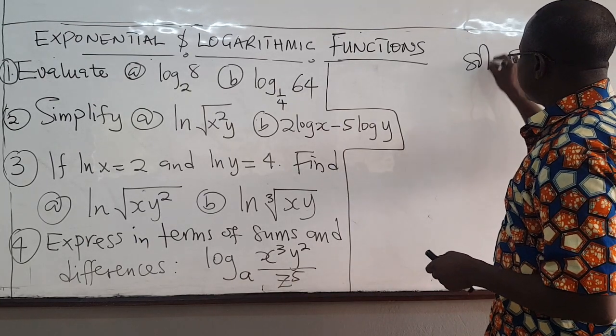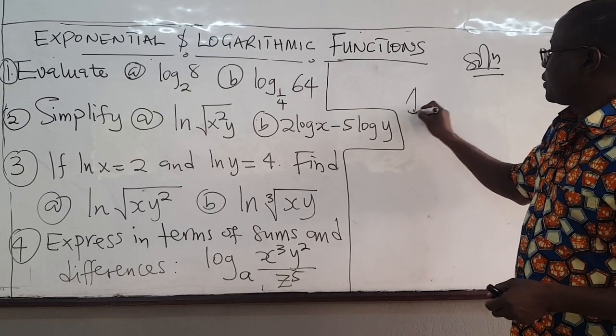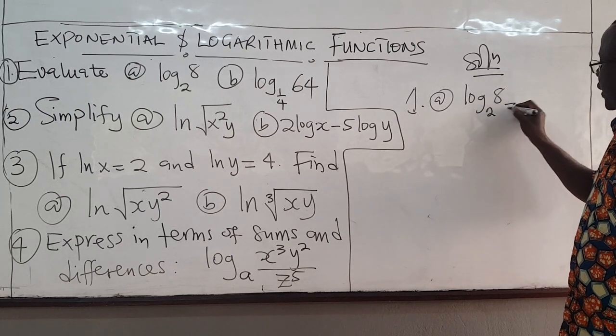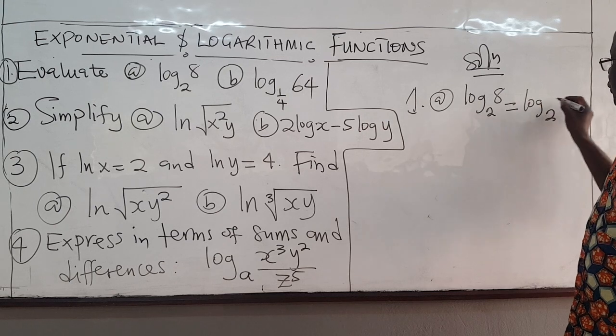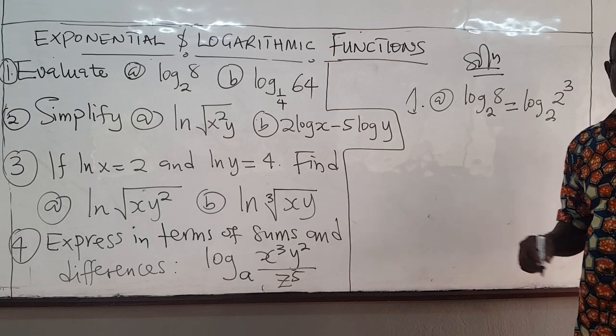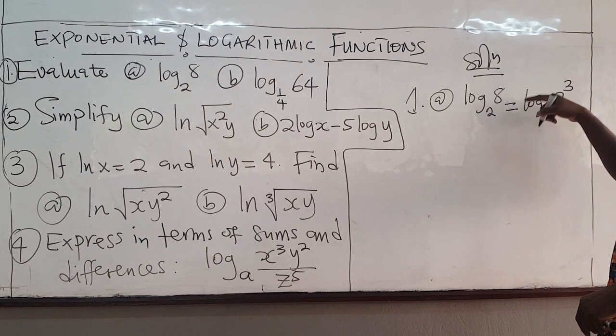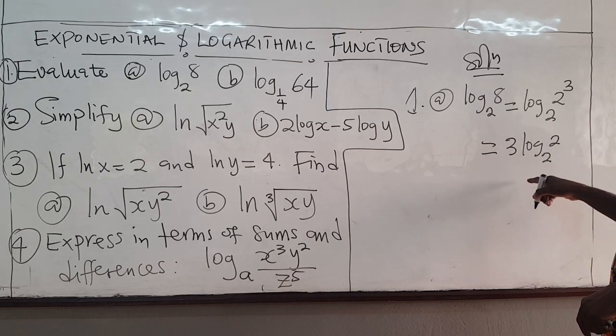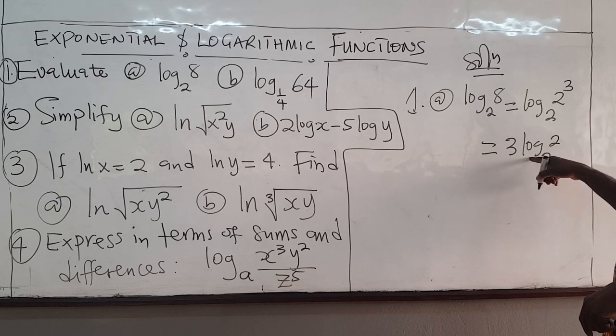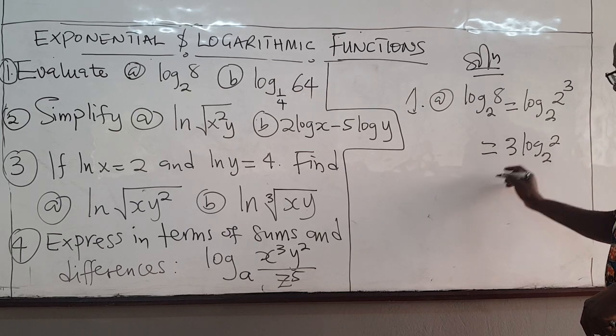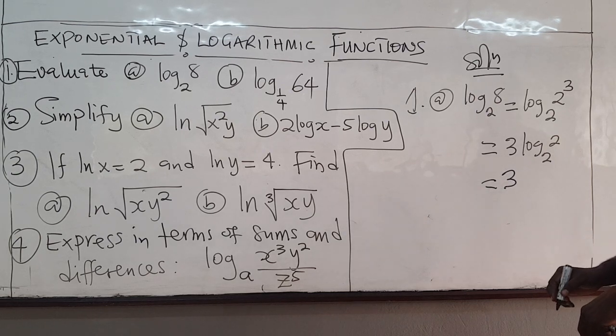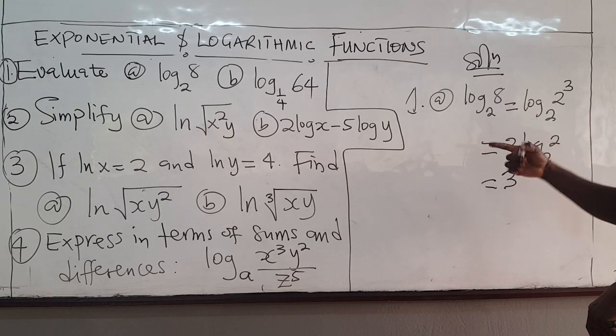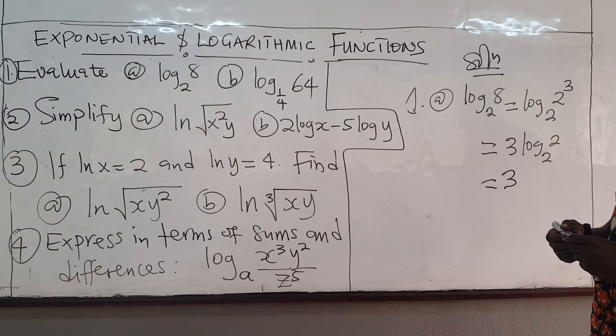Alright, so we want to look at question number 1A, log base 2 of 8. Note that we can write 8 as 2 raised to the power 3, right? And using one of the laws, you can bring this 3 down here. So this can be written as 3 log base 2 of 2. But log base A of A is 1, so log base 2 of 2 is 1 as well. So this is 1 times 3, and that is equal to 3. Okay? So it says that if you take 2 raised to the power 3 you get 8, in any sense, from the definition of logarithms.